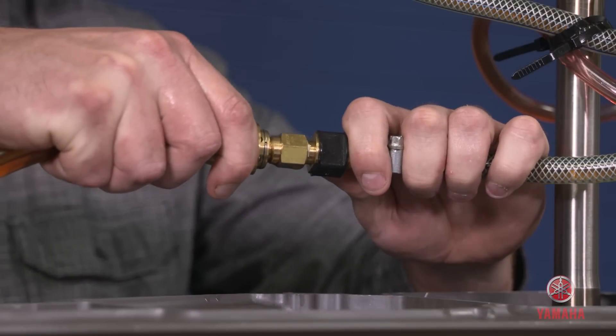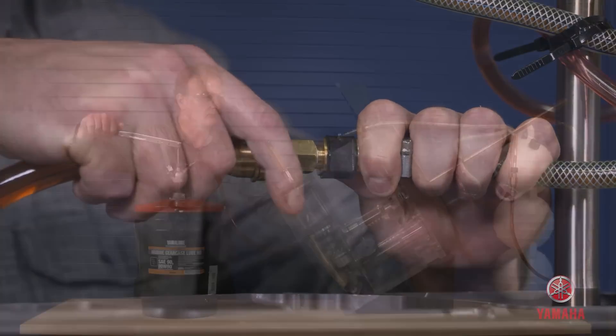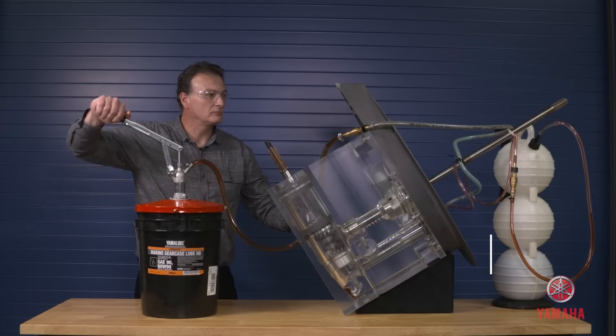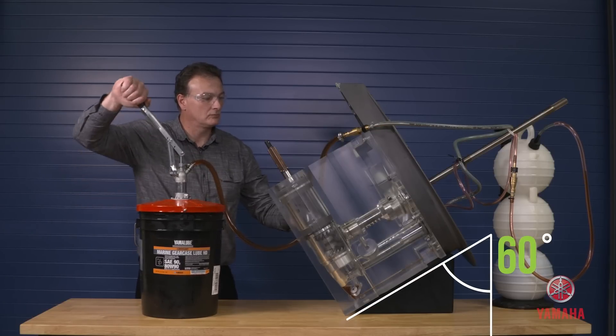Next, connect the hose from the oil pump to the oil fitting. The gear case needs to remain tilted at least 60 degrees out from the transom when filling.